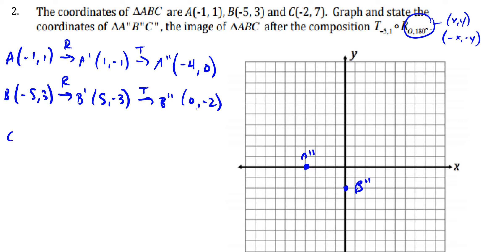If I was to look at C, well, C is negative 2, 7. After the rotation, I'm going to get C prime, which is going to become 2, negative 7. And after the translation, I'm going to get C double prime. Well, if I subtract 5, that's negative 3. And add 1, that's negative 6. Negative 3, negative 6.